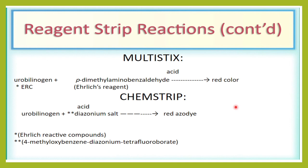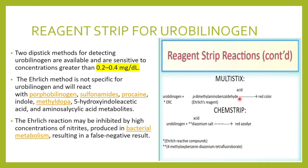Urobilinogen in urine is detected using reagent strips. There are two types of strips: the Multistix and the Chemistrip, which apply different principles. In the Multistix, urobilinogen reacts with the Ehrlich reagent forming a reddish color, whereas in the Chemistrip, urobilinogen reacts with a diazonium salt giving a reddish azo dye.